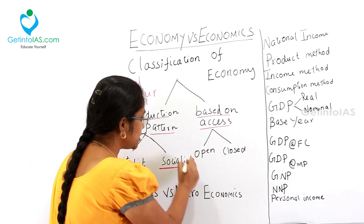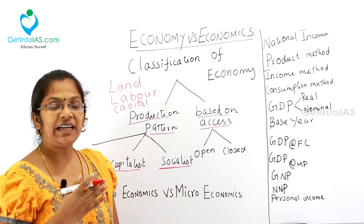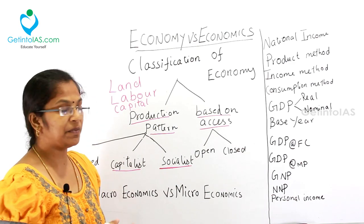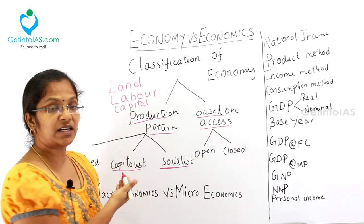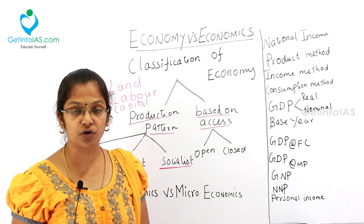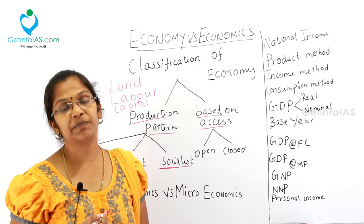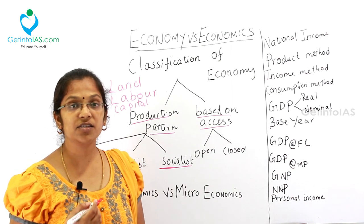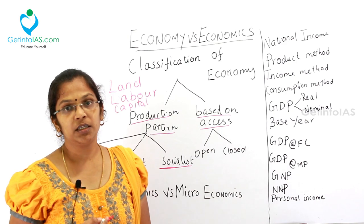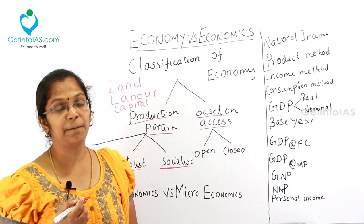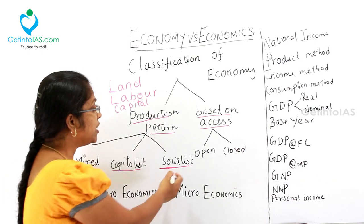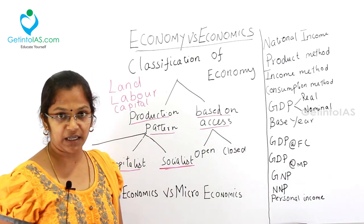What happens in the socialist economy? It is exactly opposite of capitalist economy. The factors of production — land, labor and capital — are controlled by government, and the prices are also based on government rules. There is no criteria based on demand and supply in the case of socialist economy.